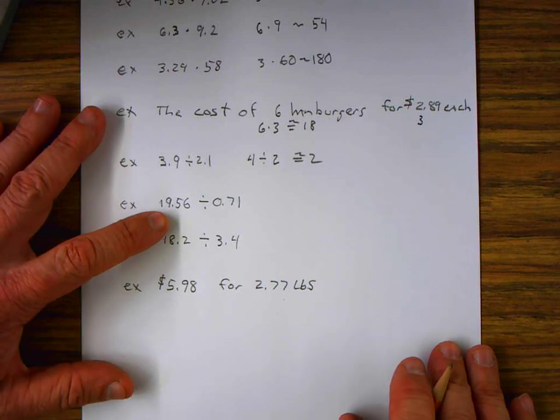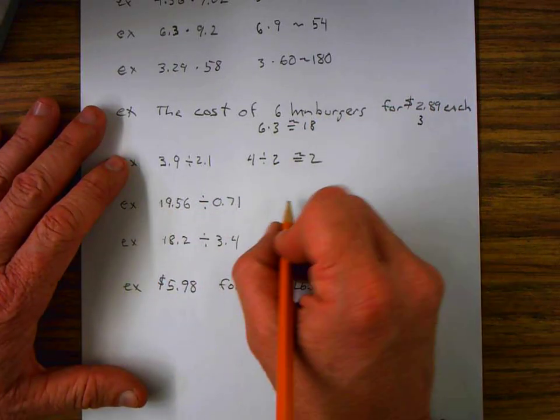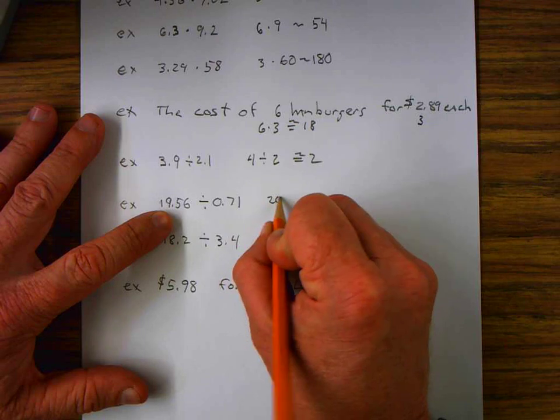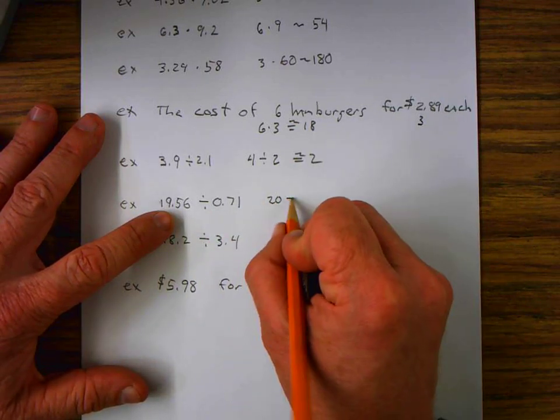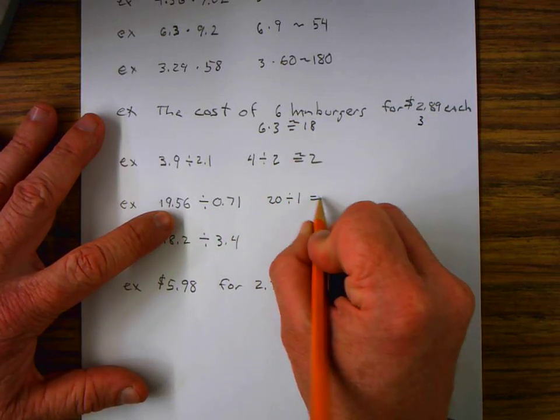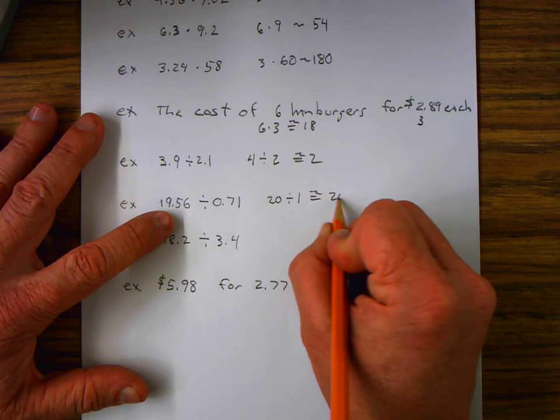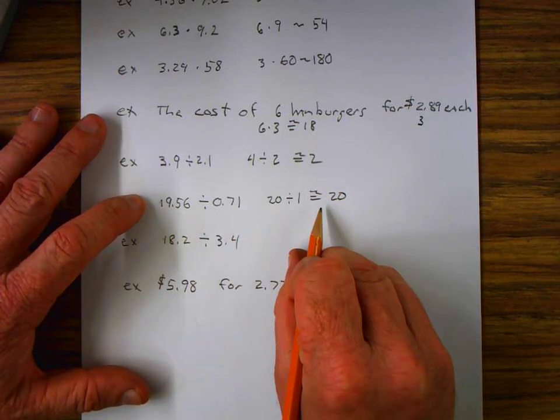On this one, we've got 19.56. That can be rounded to, 19.5 can be rounded to 20. 0.71 can be rounded to 1, and it's approximately equal to 20. This is a very approximate number.